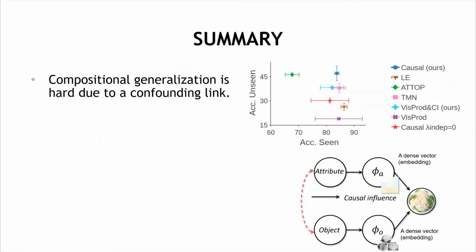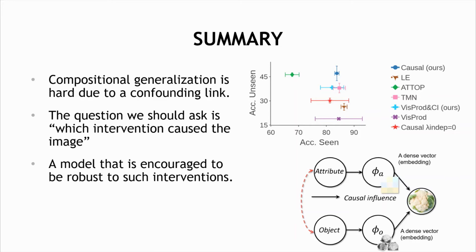To sum it up, compositional generalization is hard because of the confounding relations between the factors. A causal model formalizes this confounding relation and suggests that we should ask: which intervention caused the observed image? We presented a model that is stable across environments and achieves better recognition of unseen compositions. This work focused on the case where attributes and nouns are independent, but often they do exhibit useful dependencies. We expect that the causal approach can be used as a useful prior for those cases.